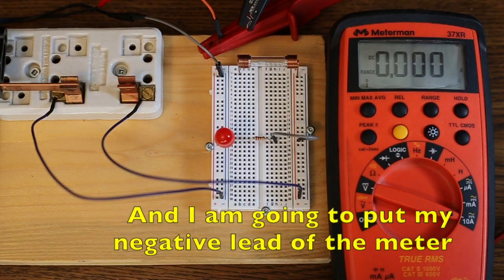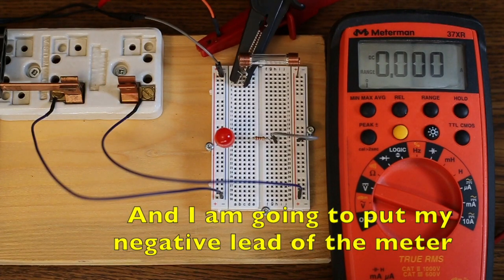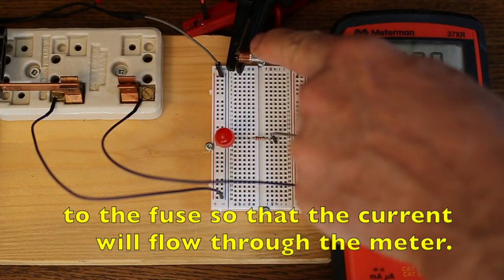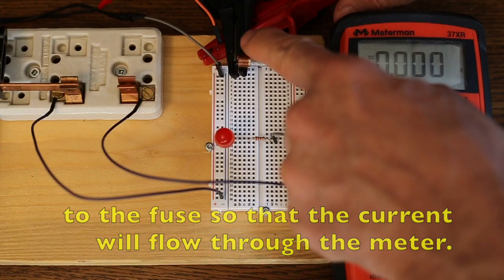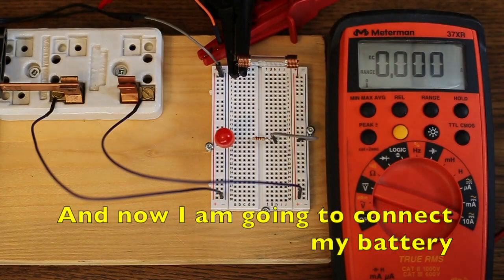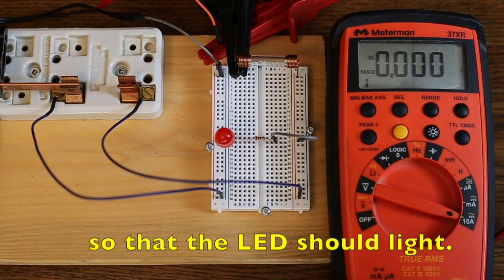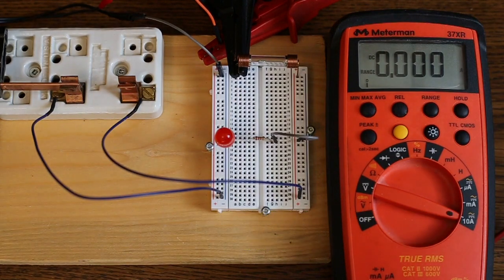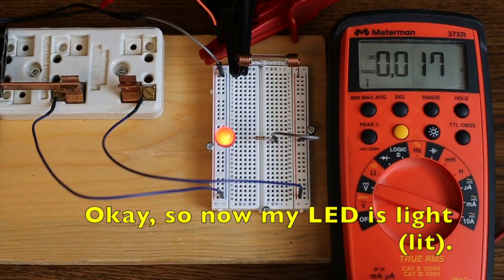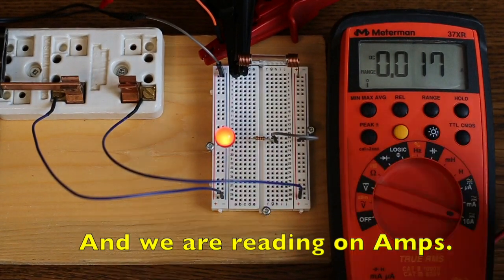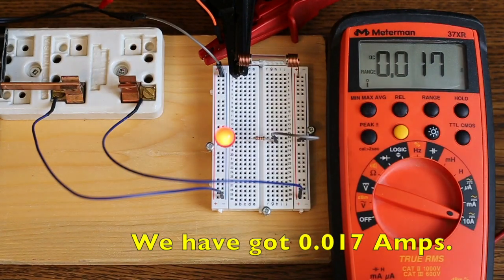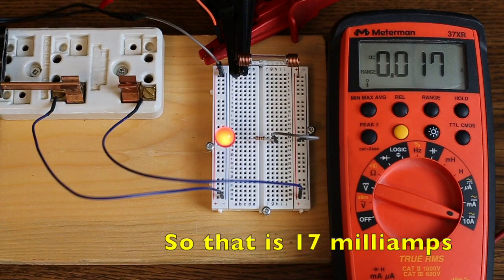And I'm going to put my negative lead of the meter to the fuse, so that the current will flow through the meter. And now I'm going to connect my battery, so that the LED should light, and then we'll see what current we have. Okay, so now my LED is light, and we're reading on amps, we've got 0.017 amps, so that's 17 milliamps.